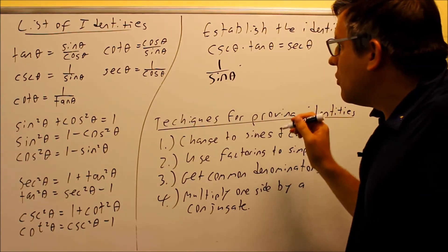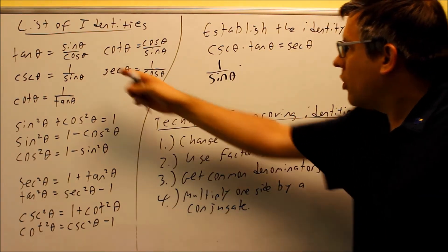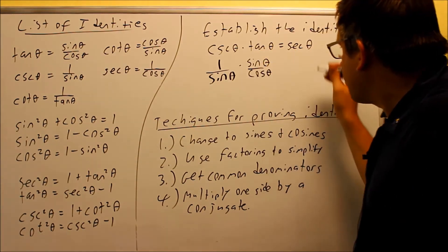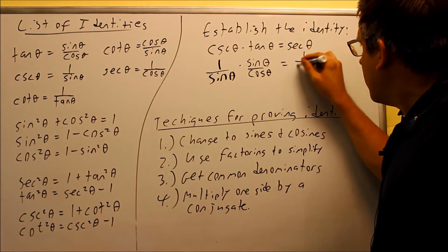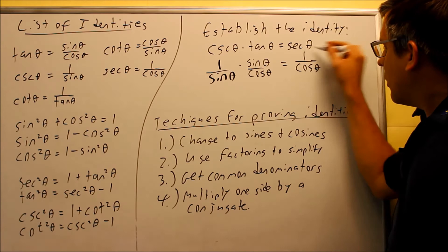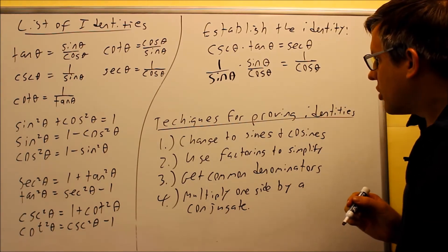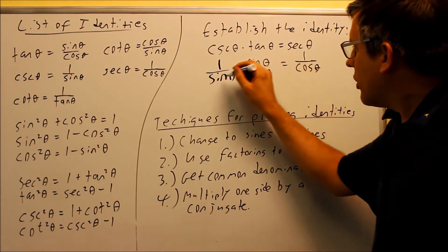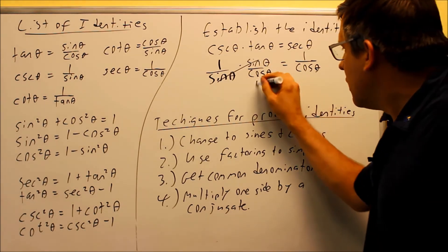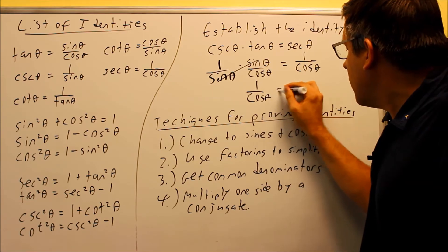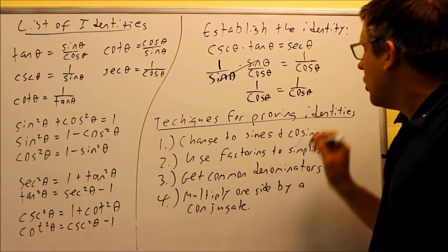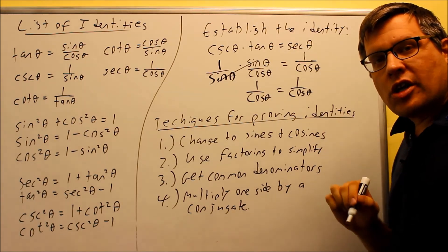Then tangent, I can use an identity for this one as well. I can change that to sine over cosine, and I can also put an identity for secant. The identity for secant would be one over cosine. Then what I notice is both of these are going to cancel because I made it all sines and cosines, and you have one over cosine theta equals one over cosine theta. So both sides are equal. You've proven that one side equals the other.